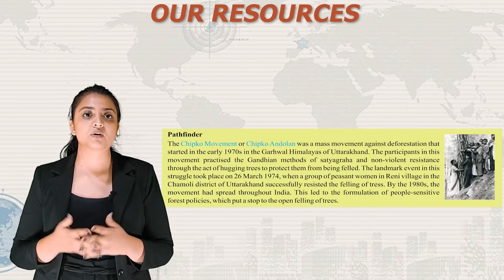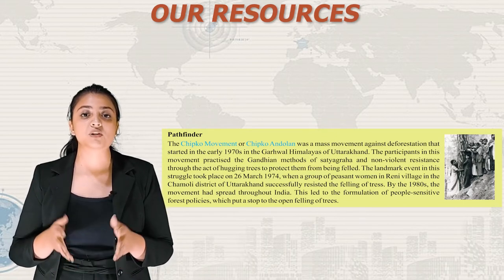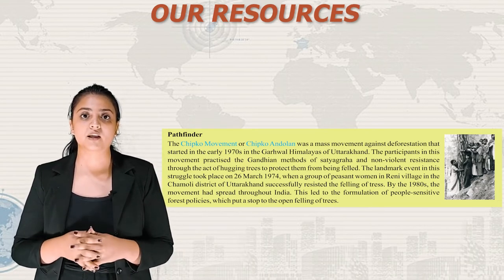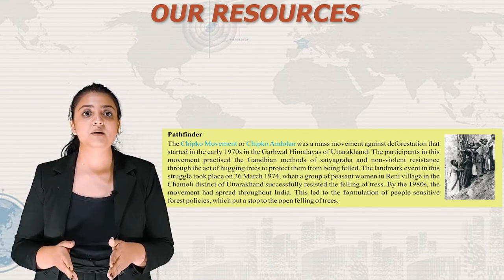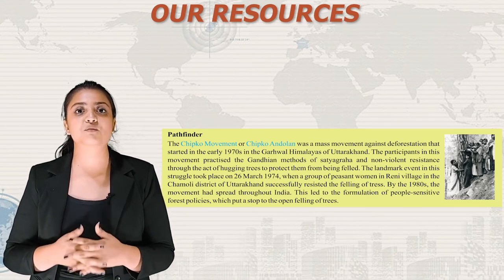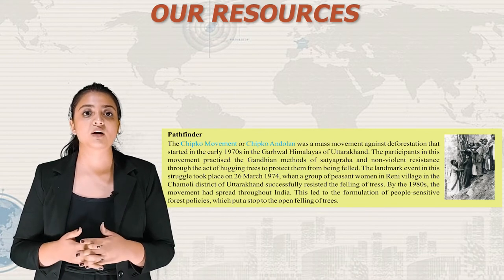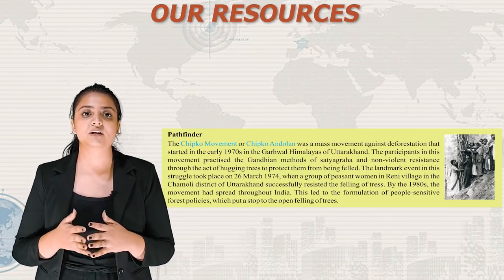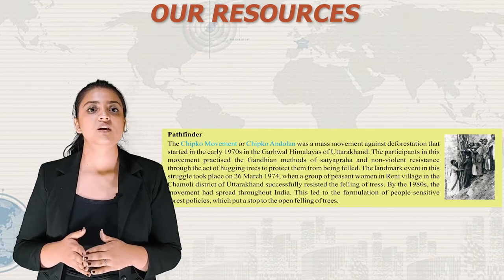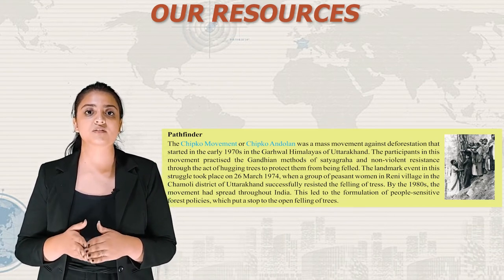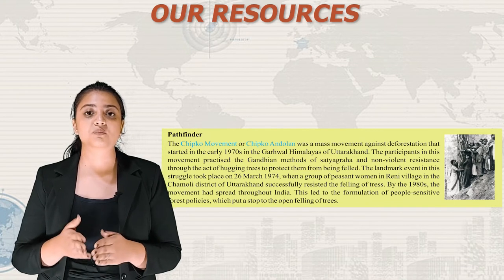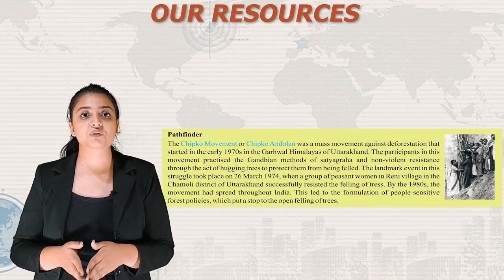The Chipko movement or Chipko Andolan was a mass movement against deforestation that started in the early 1970s in the Garhwal Himalayas of Uttarakhand. Participants practiced Gandhian methods of Satyagraha and non-violent resistance through the act of hugging trees to protect them from being felled. A landmark event took place on 26 March 1974 when a group of peasant women in Reni village in the Chamoli district of Uttarakhand successfully resisted the felling of trees. By the 1980s, the movement had spread throughout India, leading to people-sensitive forest policies that put a stop to open felling of trees.